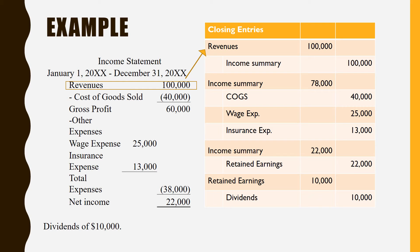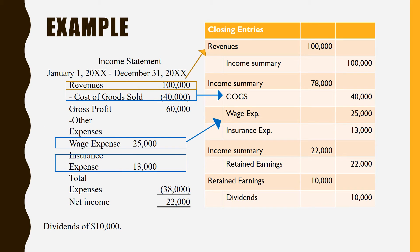Next, we take our expenses — however many you've got, you put them all in one journal entry. Expenses have a debit balance, so we credit those to zero them out, and take them to income summary. If I look at my income summary account, it's got 100 minus 78 equals 22 thousand. Sure enough, income summary is the summary of your income — so 22 thousand ends up in the income summary account, and that's then what you close to retained earnings.